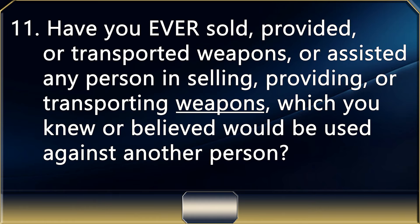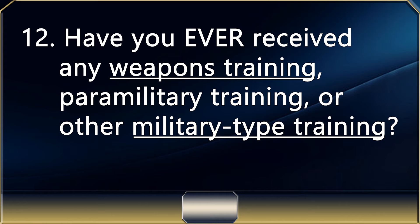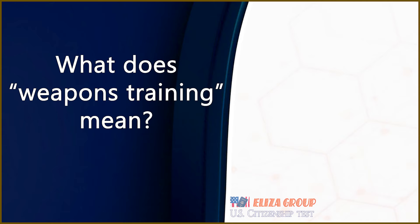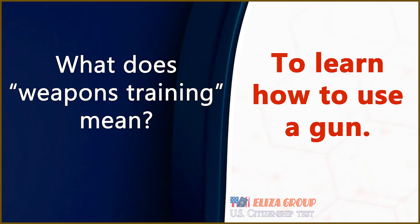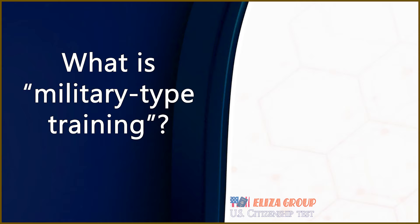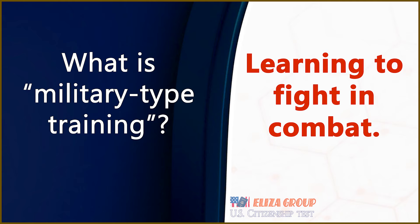Have you ever sold, provided, or transported weapons, or assisted any person in selling, providing, or transporting weapons, which you knew or believed would be used against another person? No. Have you ever received any weapons training, paramilitary training, or other military-type training? No. What does weapons training mean? To learn how to use a gun. What is military-type training? Learning to fight in combat.